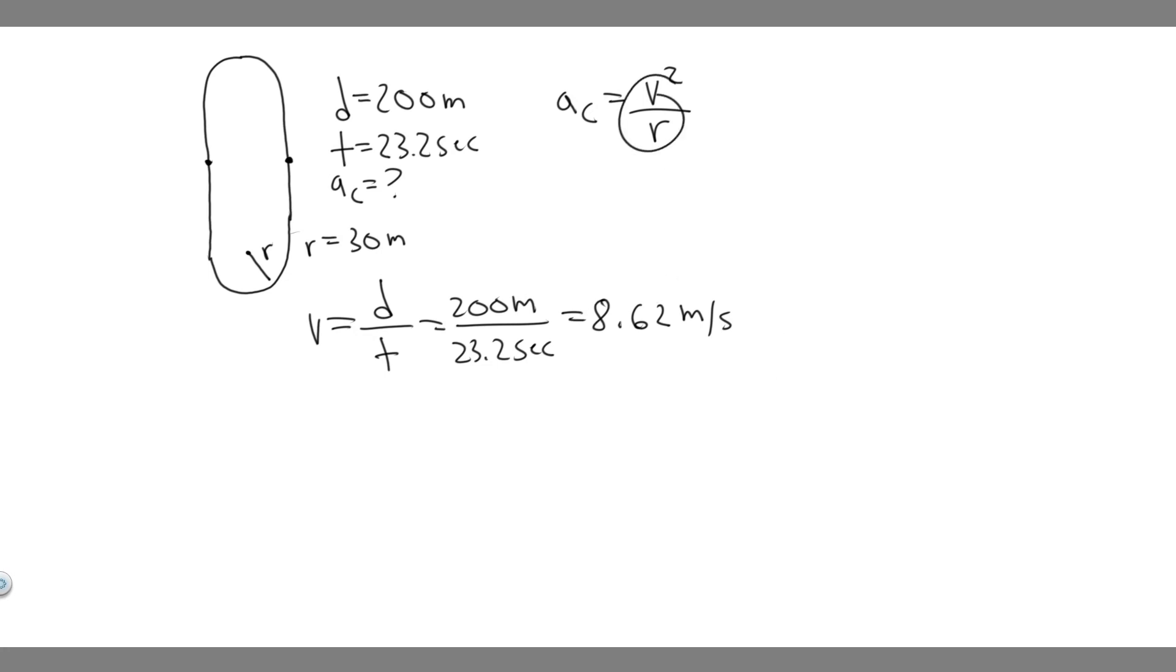And so now what we can do is just plug it in. The centripetal acceleration is 8.62 squared divided by the radius of the curvature. In this case, it's 30 meters. So 8.62 squared divided by 30. When you do this, you're going to get 2.4768. I'm just going to round it to 2.48, so about 2.48.